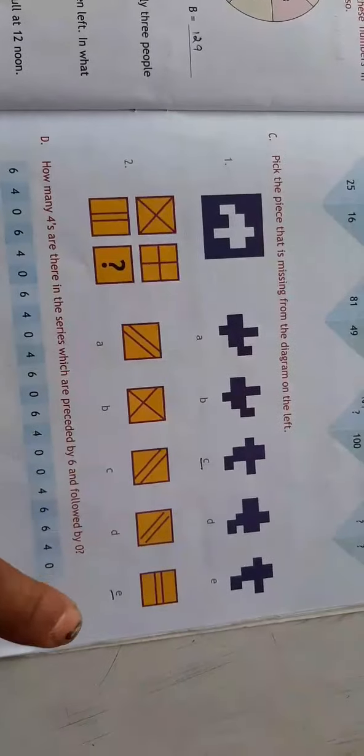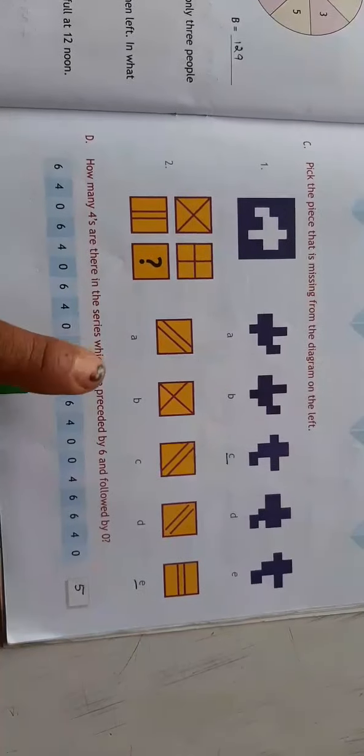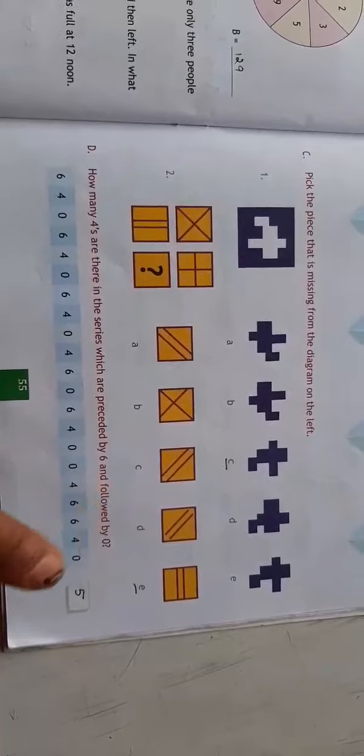Pick the piece that is missing from the diagram on the left. So if we check, in this case it is C. In second case it is E. In last case, how many times 4 is coming, preceded by 6 followed by 0. 5 times 4 is coming in this condition.